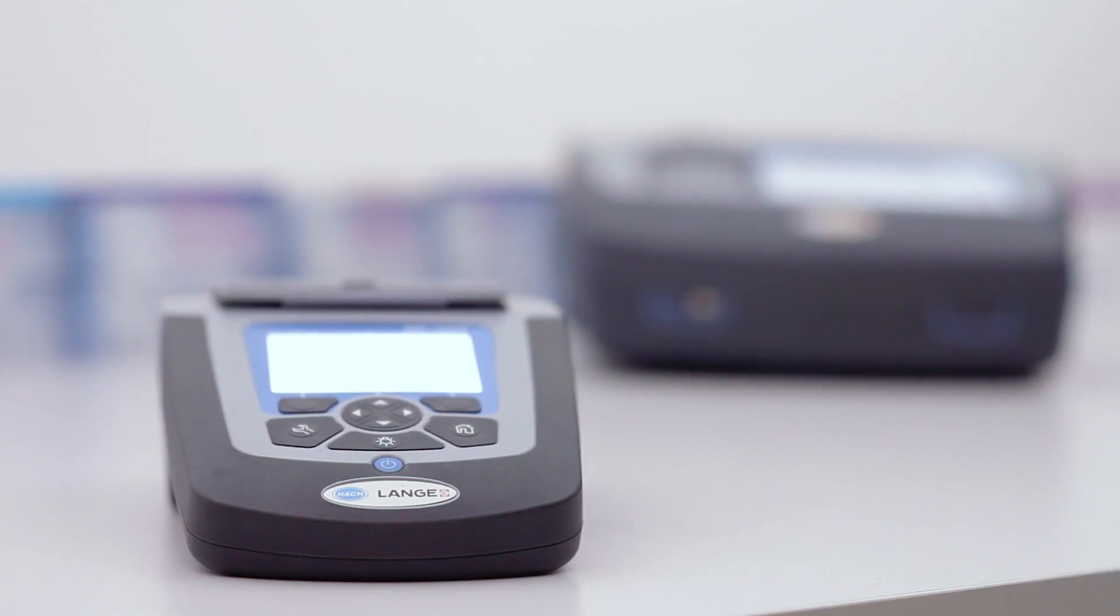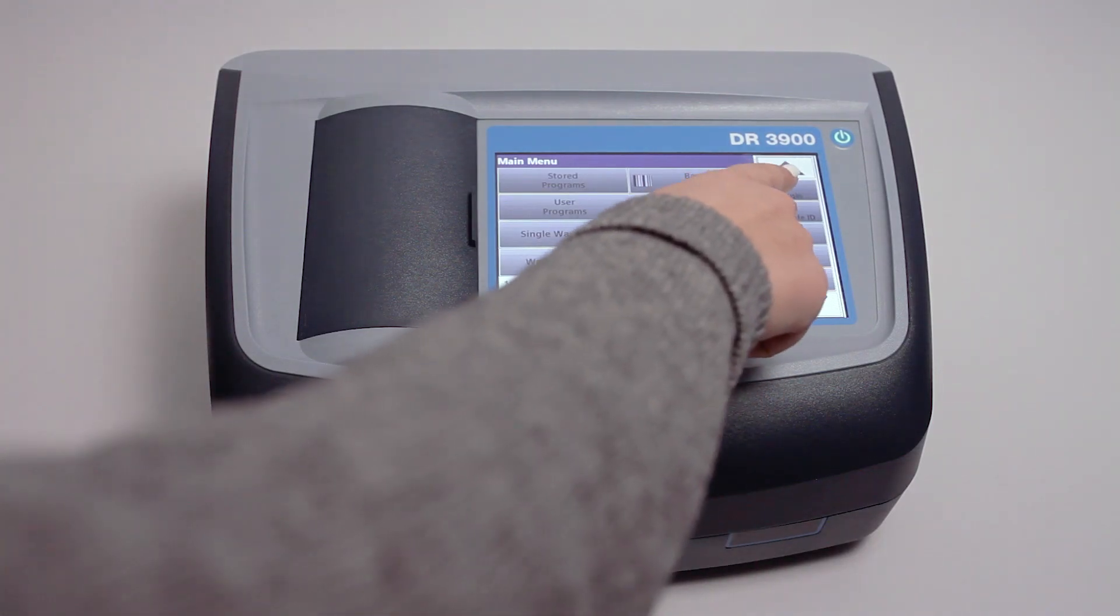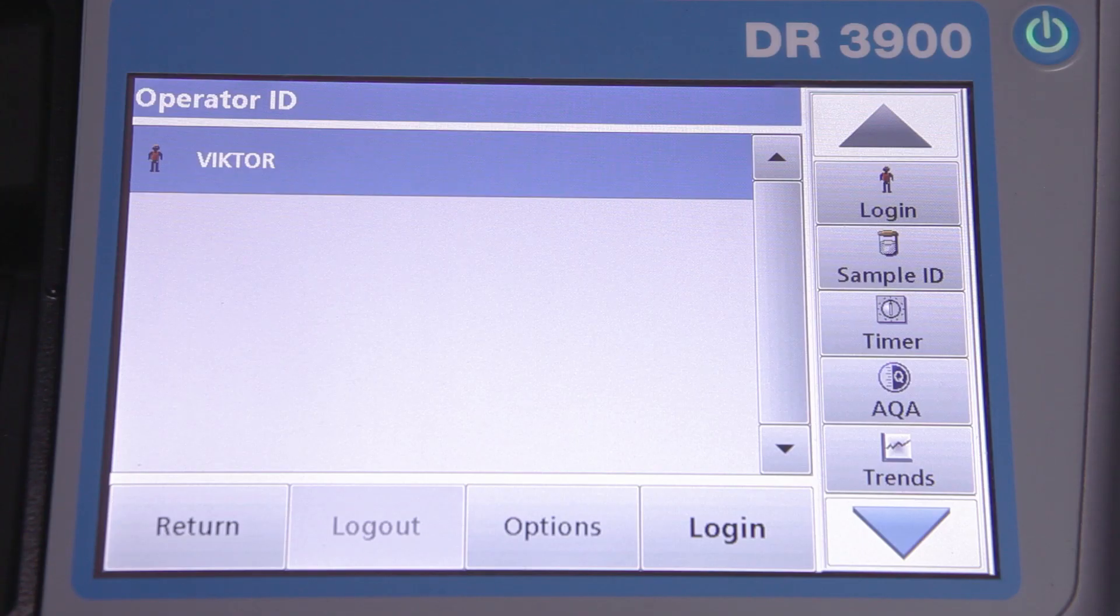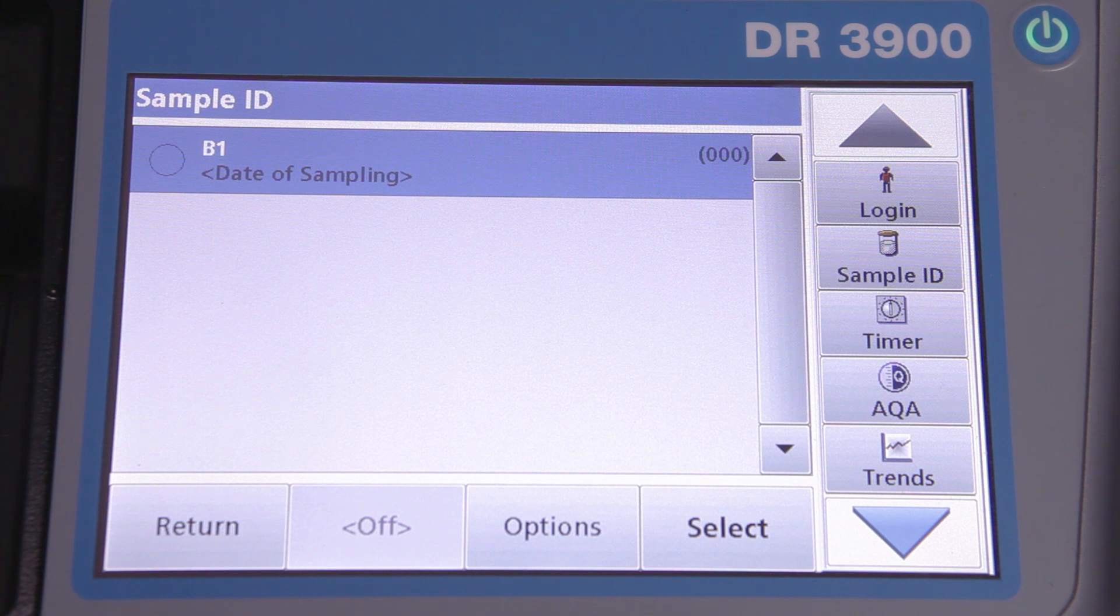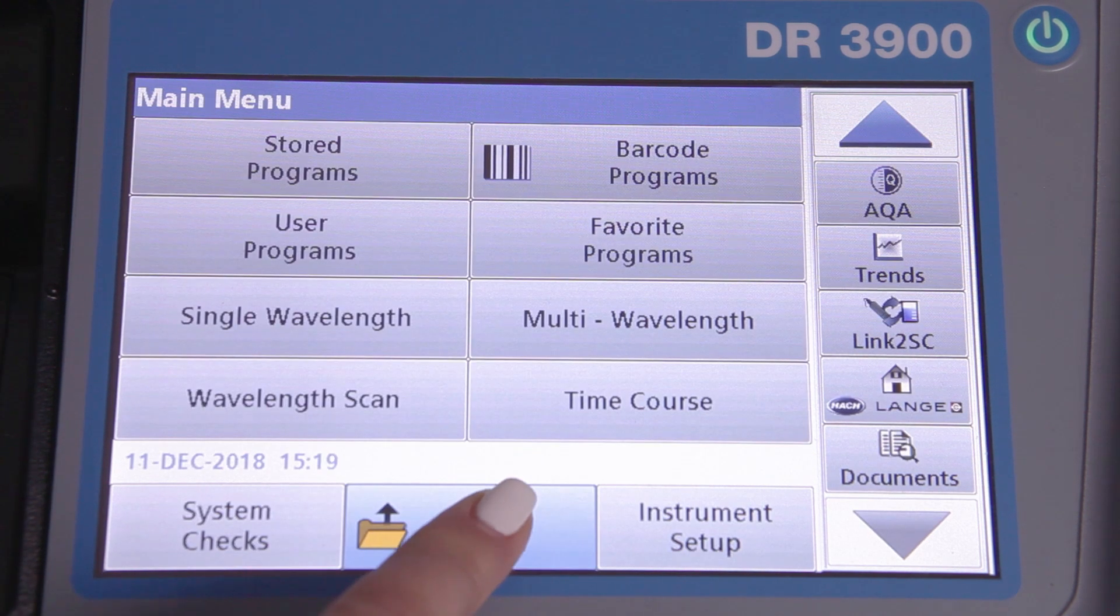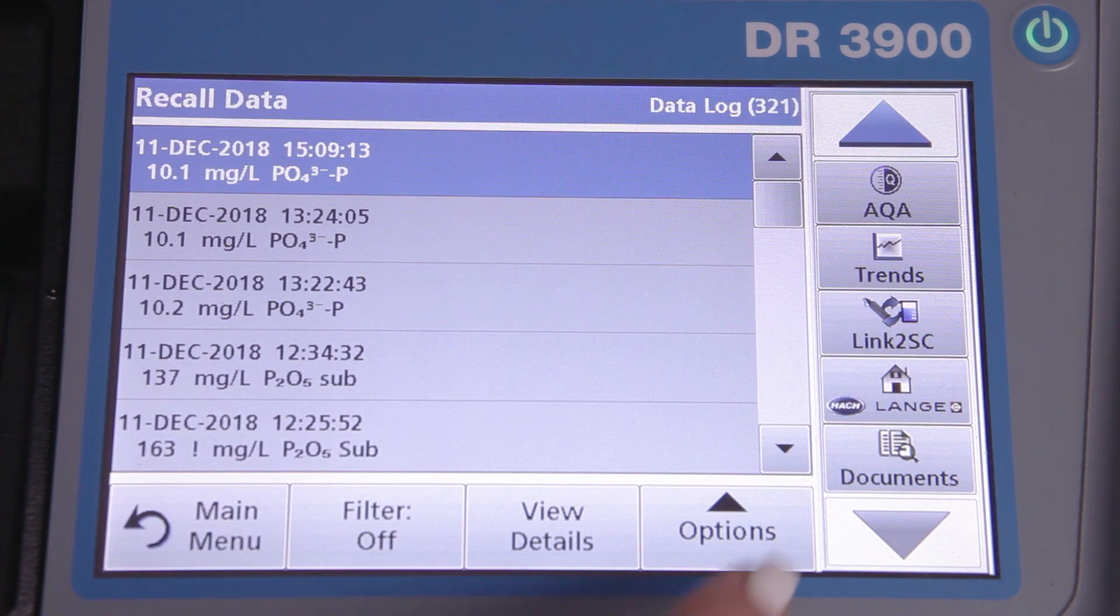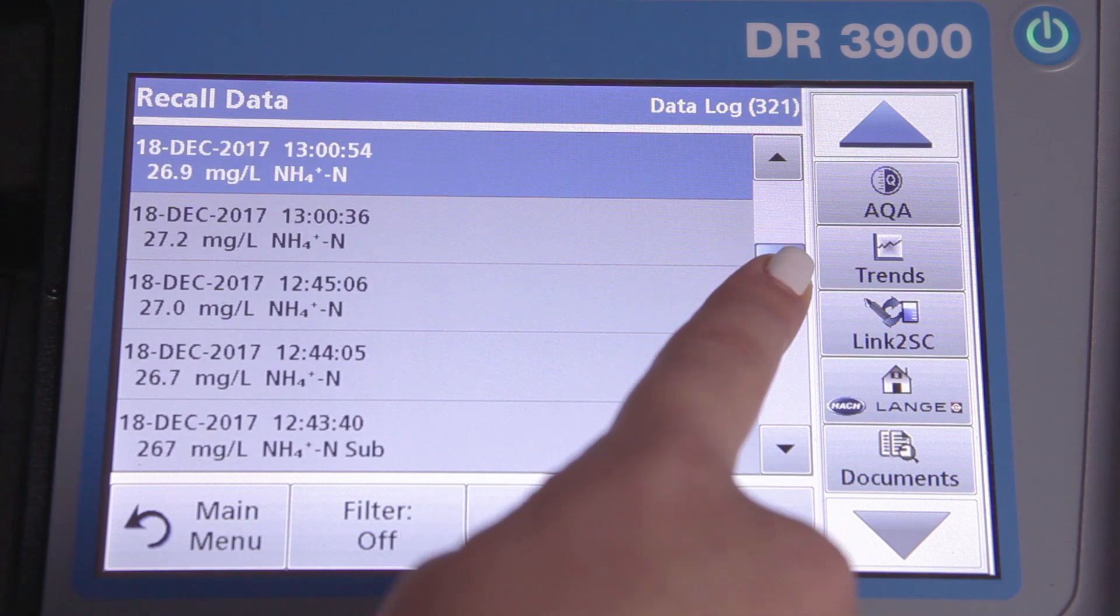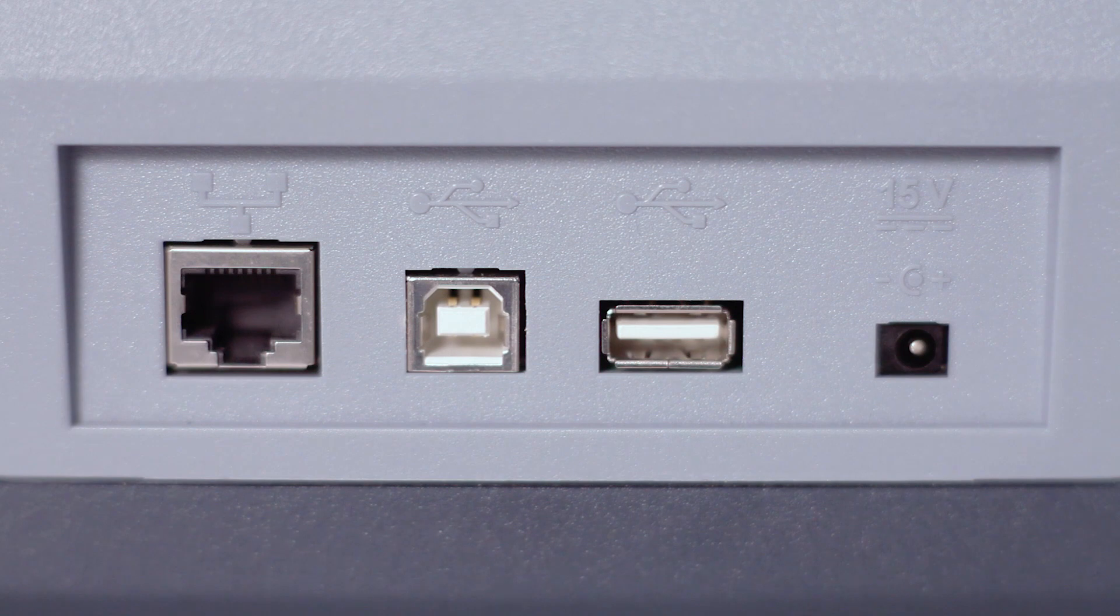For stationary operation, we recommend the Lassa Agro 3900 unit. It has automatic recognition for the cuvettes and takes 10 measurements for higher precision. The unit also has USB and Ethernet sockets for computer and printer connection.